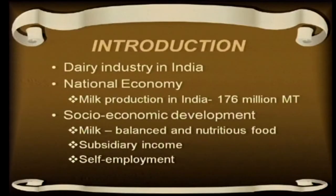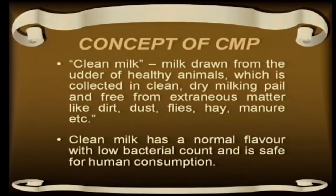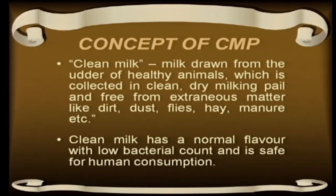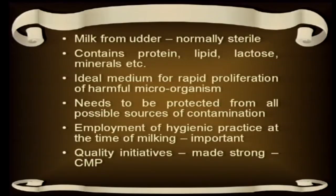What is the concept of clean milk production? We know what milk is — milk is a mammary secretion for the development of new beings, that is their calf. But clean milk is milk which is drawn from a healthy animal, collected in a clean milking pail, and which is free from external matter like dirt, dust, flies, hair, and manure. Clean milk has a normal flavour, low bacterial count, normal acidity, and is safe for human consumption. These four parameters characterize clean milk.